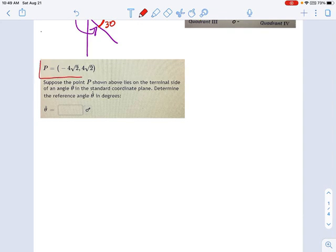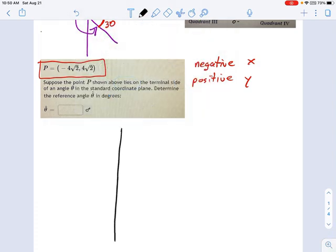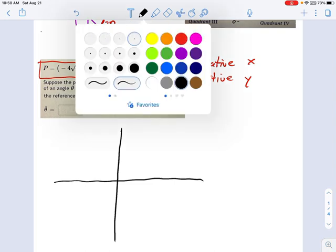Take a look at that coordinate again. -4√2 and 4√2. So what that's saying is negative x and positive y. So let's draw ourselves a standard coordinate plane with a triangle in it. That's always a good place to start. What would this triangle look like? Let's make it nice and big.